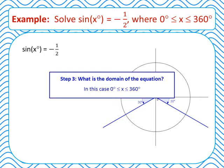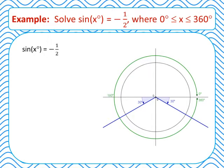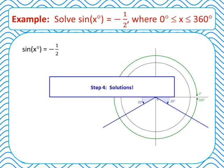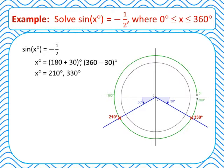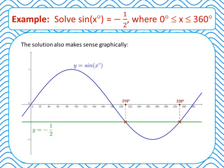Our domain is from 0 to 360 degrees — one full lap of the unit circle, moving anti-clockwise. We can now see our two solutions. The first angle is at 180 degrees plus a further 30 degrees, and the second solution is at 360 degrees minus 30 degrees. So we have two solutions at 210 degrees and 330 degrees. Graphically, the intersection of y equals sine x and y equals negative 1 half over 0 to 360 degrees confirms exactly these two solutions.